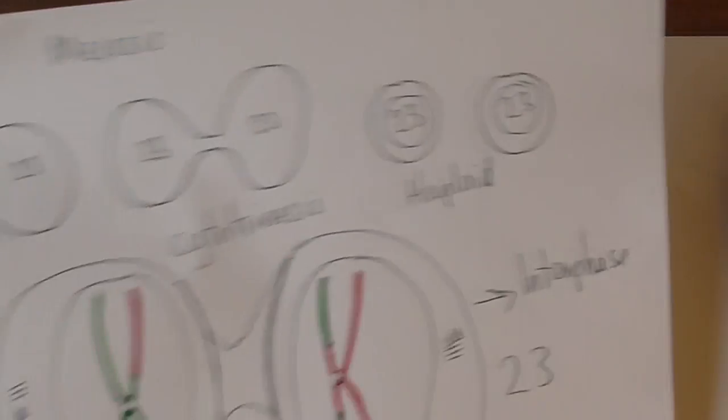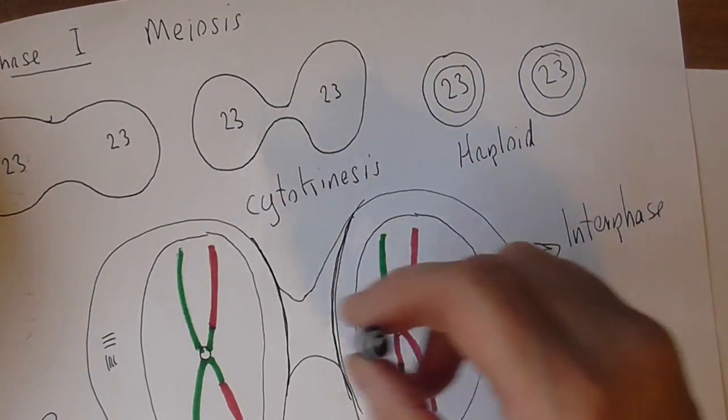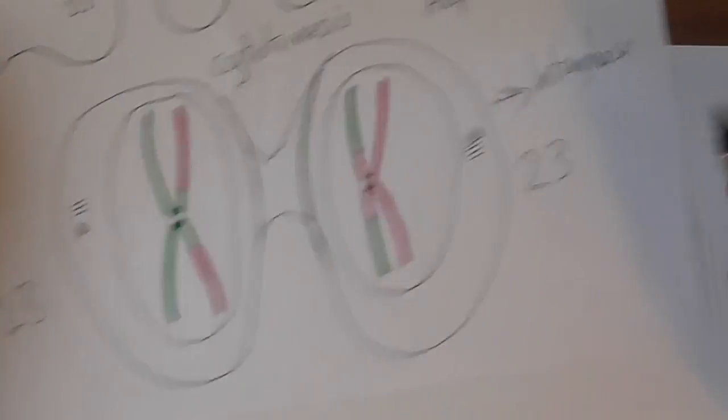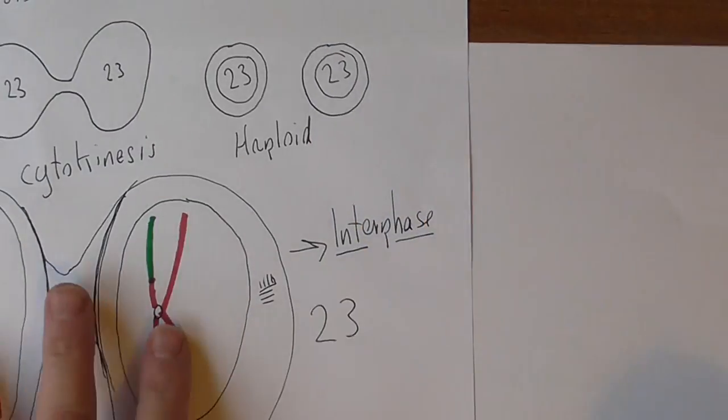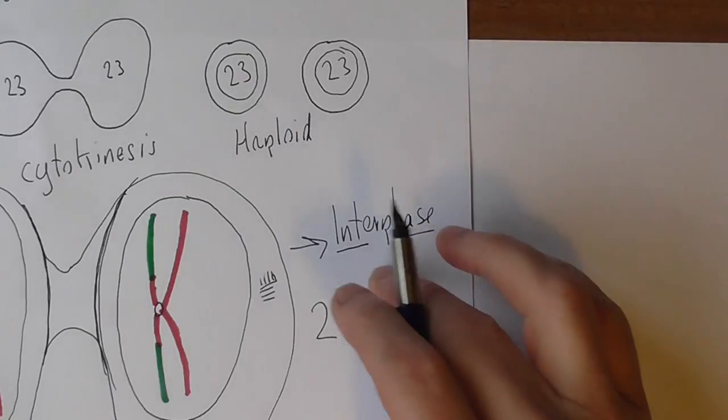So we're now ready for the final stage. There's an interphase after this, where the cell goes into interphase for a period of time. But it's important to know that in this interphase there's no more duplication of genetic material.